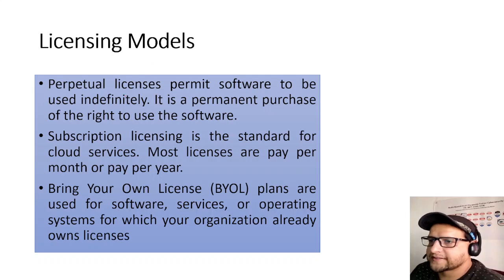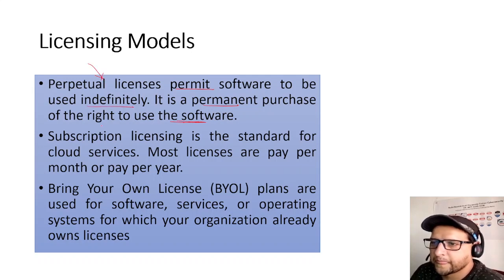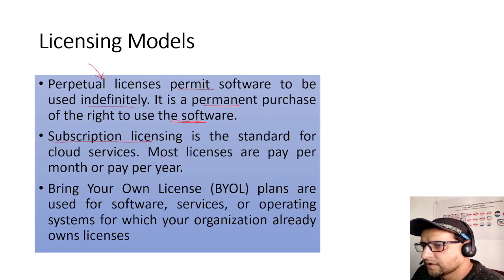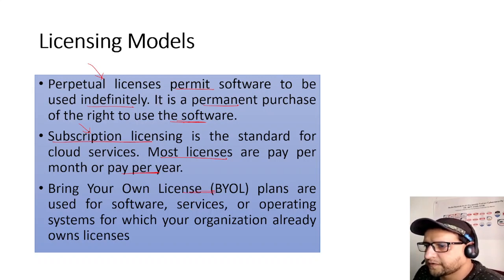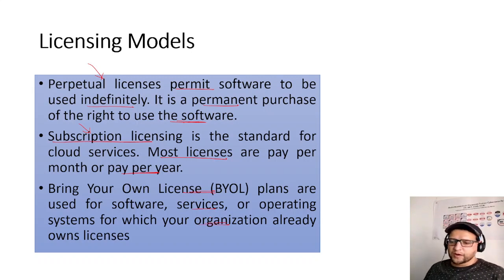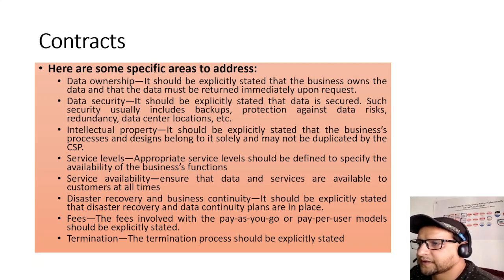Licensing models in the cloud: A perpetual license permits software to be used indefinitely — a permanent purchase. If you don't need it indefinitely, you go for subscription licensing, which is the standard for cloud — pay per month or per year, like OTT subscriptions. Bring Your Own License (BYOL) plans are for software or operating systems your organization already owns a license for, which you can use when creating a virtual machine to save money.